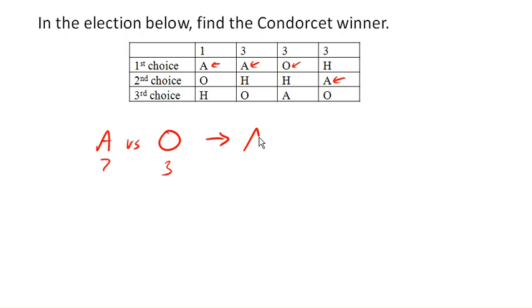If we look at A versus H, then let's see. A is preferred, A is preferred, H is preferred, H is preferred. So 4 people prefer A, and 6 people prefer H. And so H would be the preferred choice there.